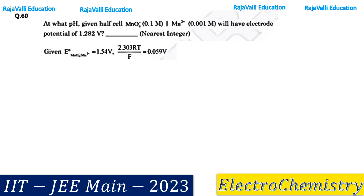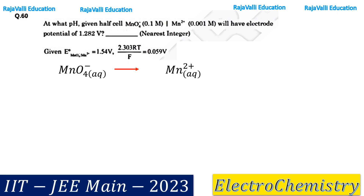Next, we see the third question: at what pH will the half-cell MnO₄⁻/Mn²⁺ have an electrode potential of 1.282 V? Given: E⁰(MnO₄⁻/Mn²⁺) = 1.54 V, 2.303RT/F = 0.059 V, [MnO₄⁻] = 0.1 M, and [Mn²⁺] = 0.001 M. This question is from IIT JEE May 2023, from the chapter on electrochemistry based on the Nernst equation.